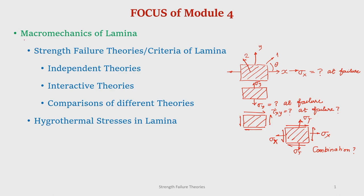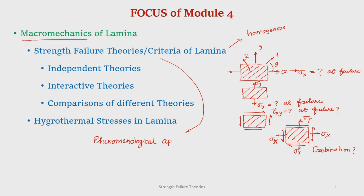Again, it is under macro mechanics. Therefore, the failure theories we will be considering basically consider the lamina to be homogeneous. This is actually mostly a phenomenological approach, meaning there are two types of approaches in the failure theories. In this phenomenological approach, we are concerned with the phenomenon and its consequence — we do not go into much of its cause. A lamina subjected to load fails, and we want to know what is the strength of that lamina.